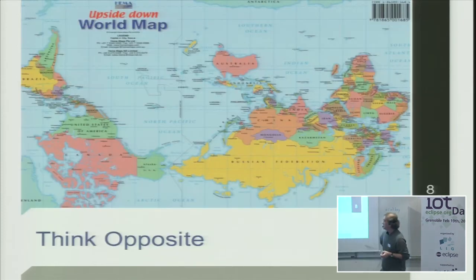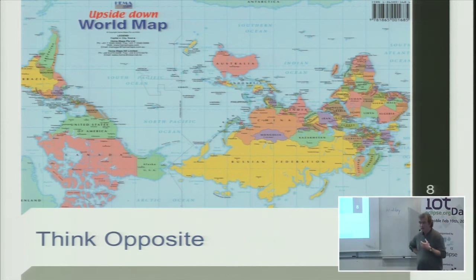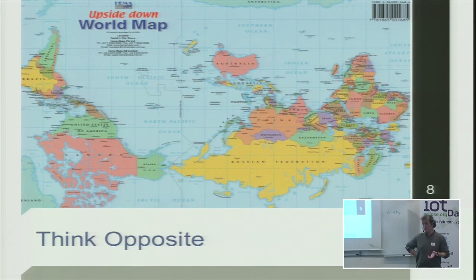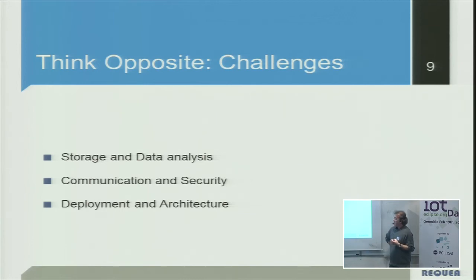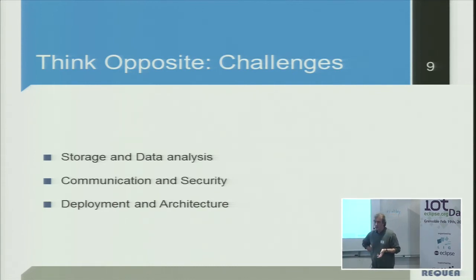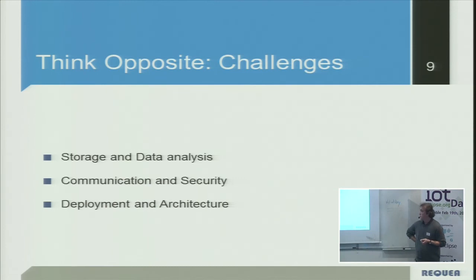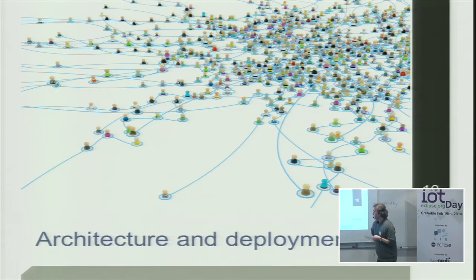That of course creates challenges. Everything is reverted, so you have to understand that everything is different. If you plan the regular way with everything you've learned and experienced, it's just not going to work. The challenges we've seen — and this is both feedback and a call for solutions, especially in the Eclipse group — are: storage and data analysis, communication and security, and deployment and architecture. Let's start with the last one: architecture and deployment.